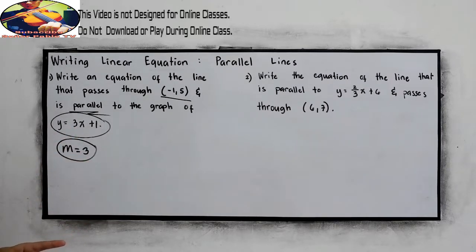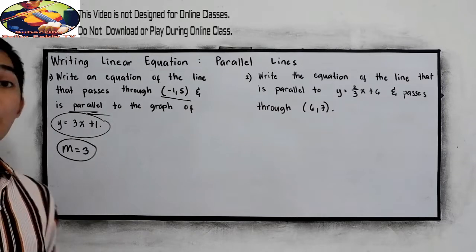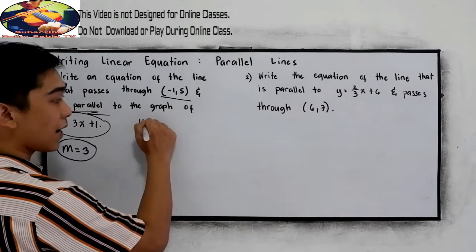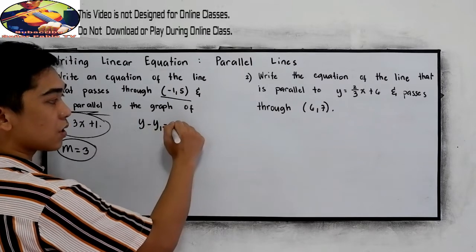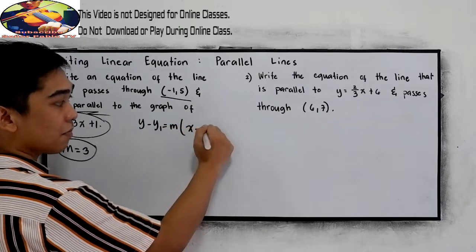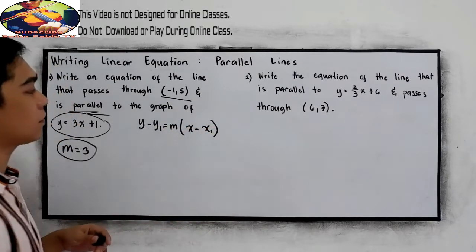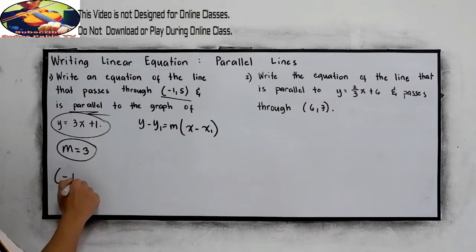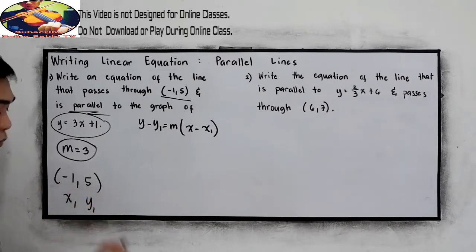Now, from our previous topic, the point-slope form is y minus y sub one is equal to m times x minus x sub one. We have another given, which is the point negative one comma five. This will be our x sub one and y sub one.